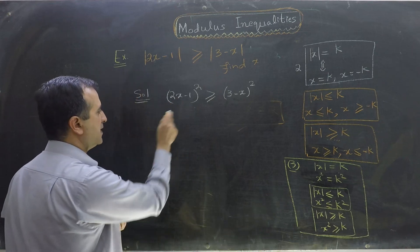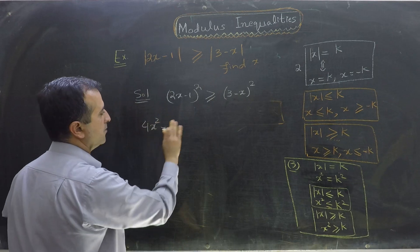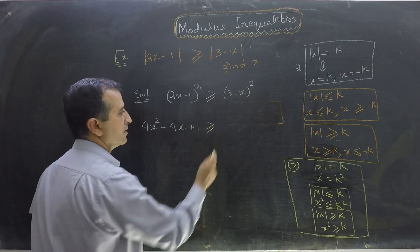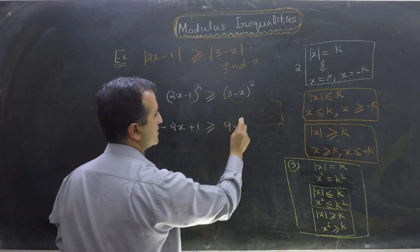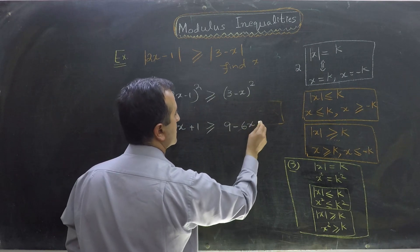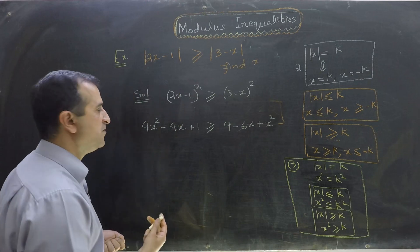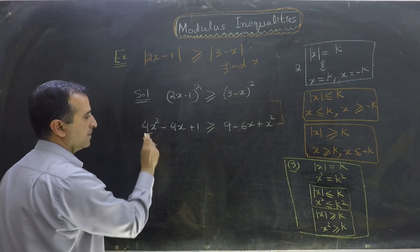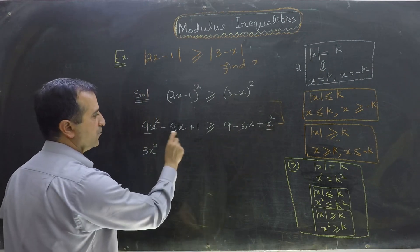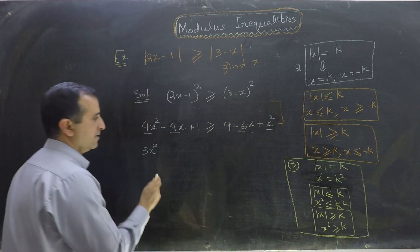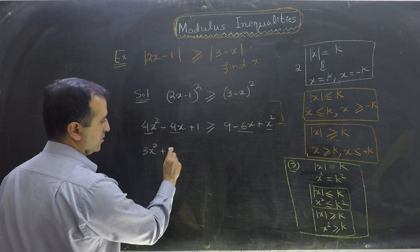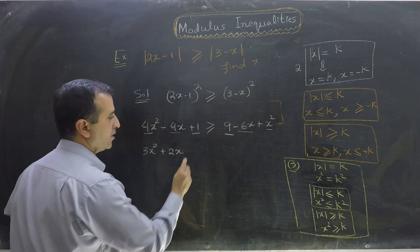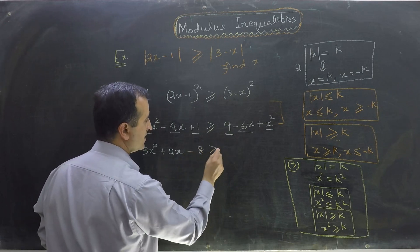Now let's expand: 4x squared minus 4x plus 1 is greater than or equal to 9 minus 6x plus x squared. Simplifying: 4x squared minus x squared is 3x squared, minus 4x plus 6x is plus 2x, and 1 minus 9 is minus 8. So 3x squared plus 2x minus 8 is greater than or equal to 0.